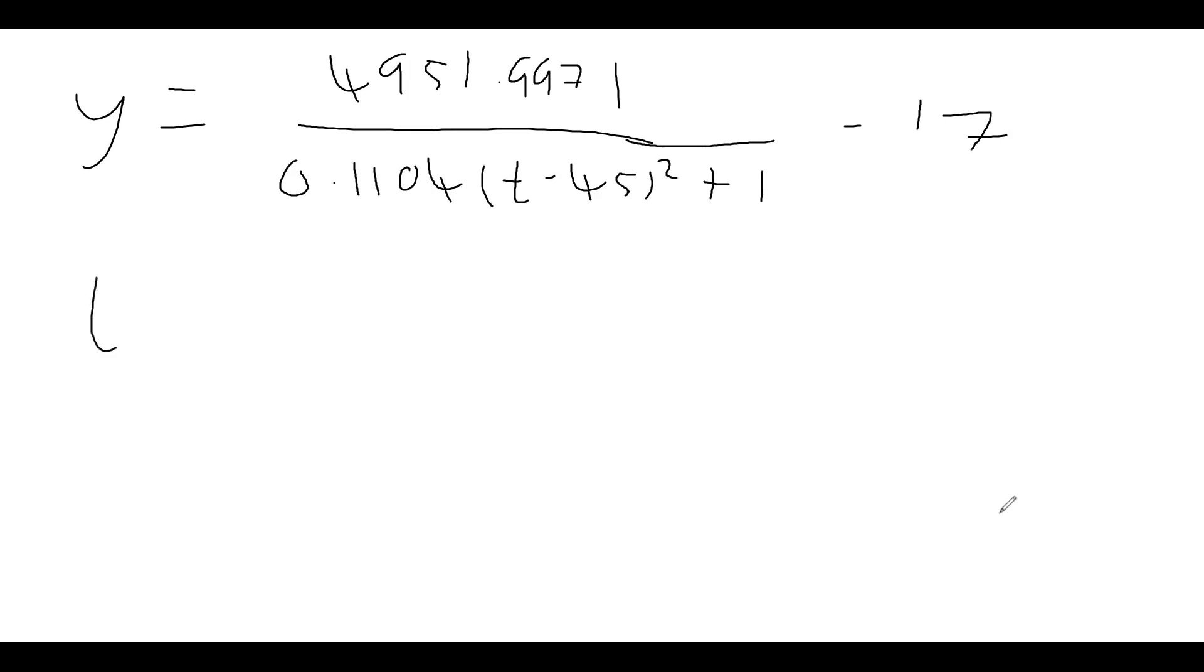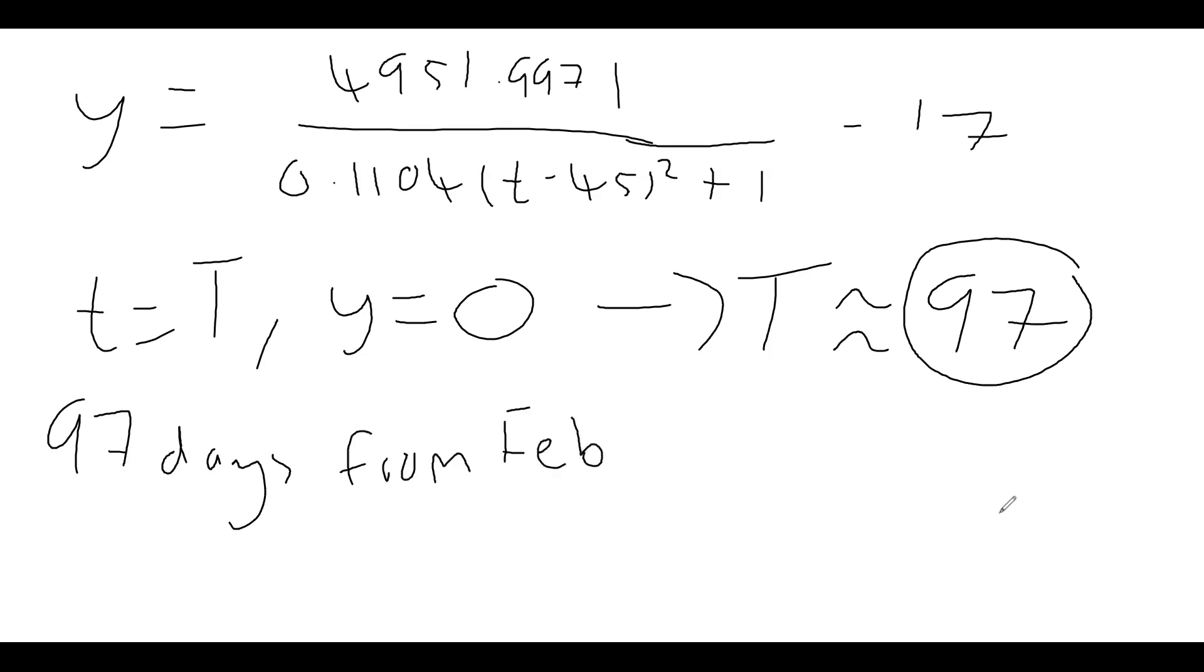So now we want to find the magic t value when the number of active cases is zero. So we plug zero in and solve. Again, a nice exercise for you to try. But I don't want to waste time. Let's get to the answer. That means we get t is roughly 97. That's the magic number. 97 days from t equals zero. Drum roll. 97 days from February 19th is May 16th.